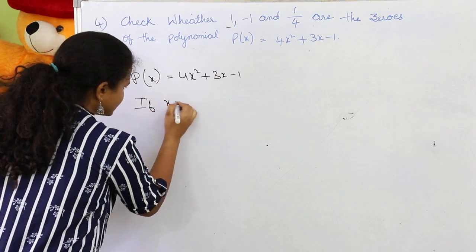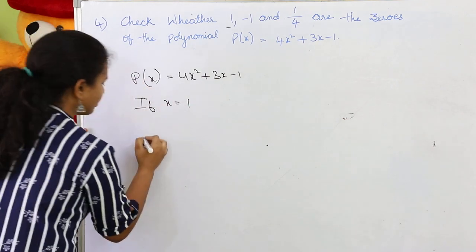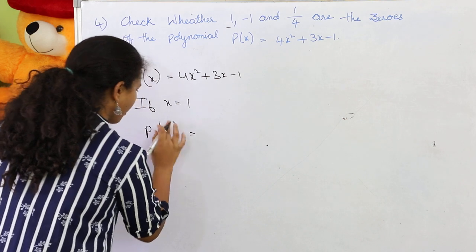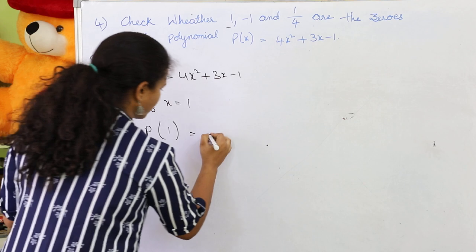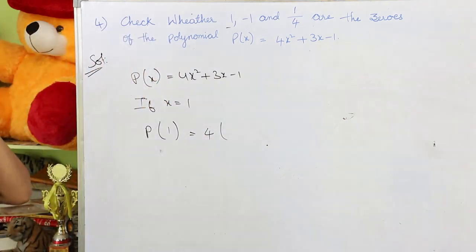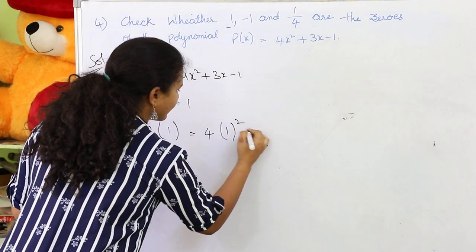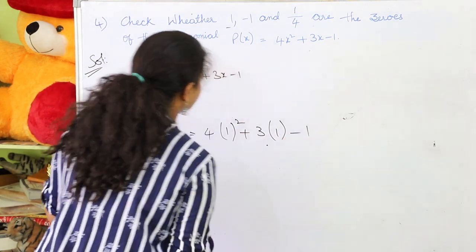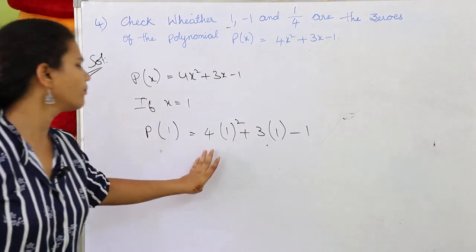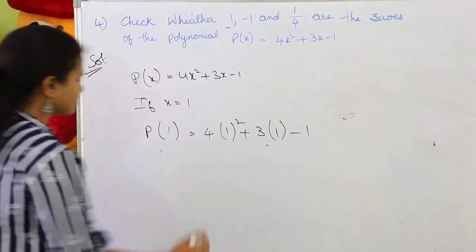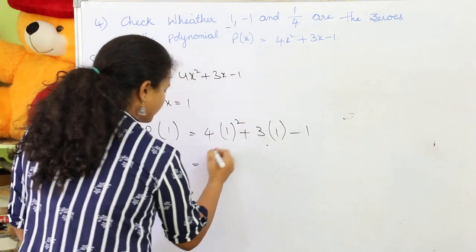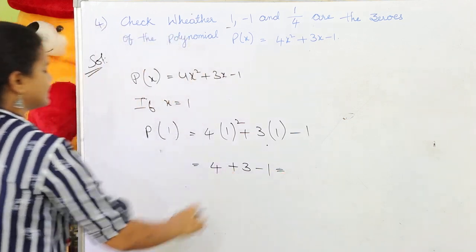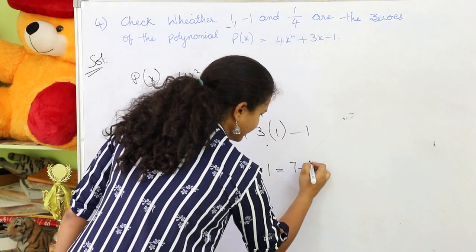If x = 1, then p(1) = 4 × 1² + 3 × 1 - 1. Now 1² = 1, so 4 × 1 = 4; and 3 × 1 = 3; minus 1 as it is. So we have 4 + 3 - 1. That gives us 4 + 3 = 7, and 7 - 1 = 6.